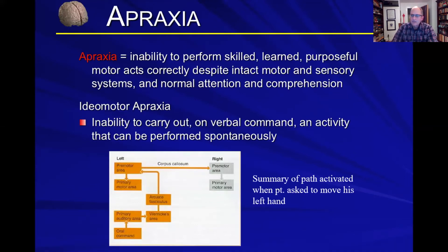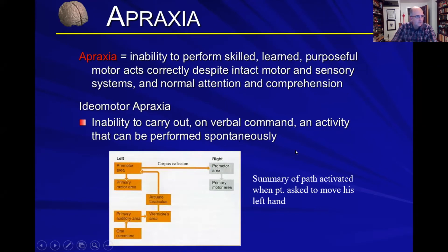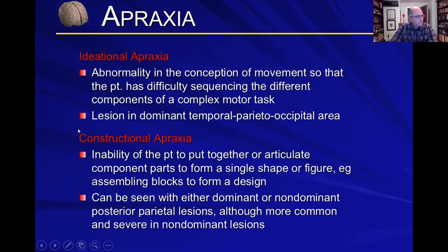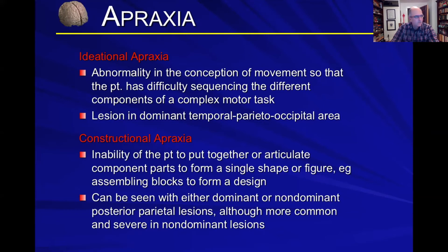You can have an apraxia of really any motor task, whether it's moving your fingers, talking, or swallowing. There are a couple of specific types of apraxia. There's ideomotor apraxia — that is the inability to carry out on verbal command an activity that can normally be performed spontaneously. There's also constructional apraxia and ideational apraxia. Just remember that apraxia refers to problems with fine motor skills.